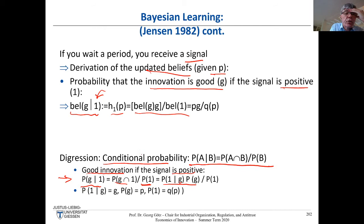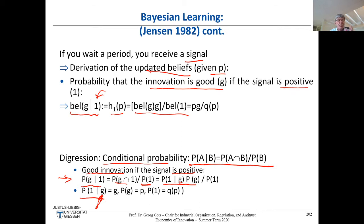What is the probability of receiving a high profit given a good innovation? That's just G — with a good innovation there's a 75% chance of a high profit, so you get that high signal with 75% probability. The probability that you have a good innovation is just the prior belief P we started with — say 50%, meaning Windows 10 is good with 50% probability. That's just a subjective probability.